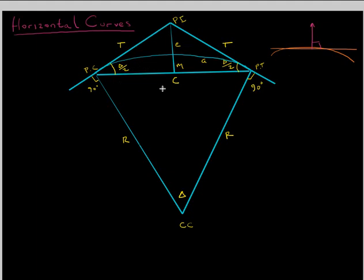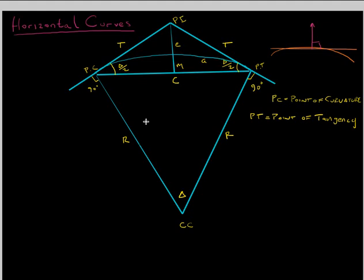This is a horizontal curve and there are many parts to it. PC is the point of curvature. PT is the point of tangency. It's like part of a circle — you're going along a road and when the curve begins, that's called your PC, and where it ends and you go back along a straight road, that's called your PT.